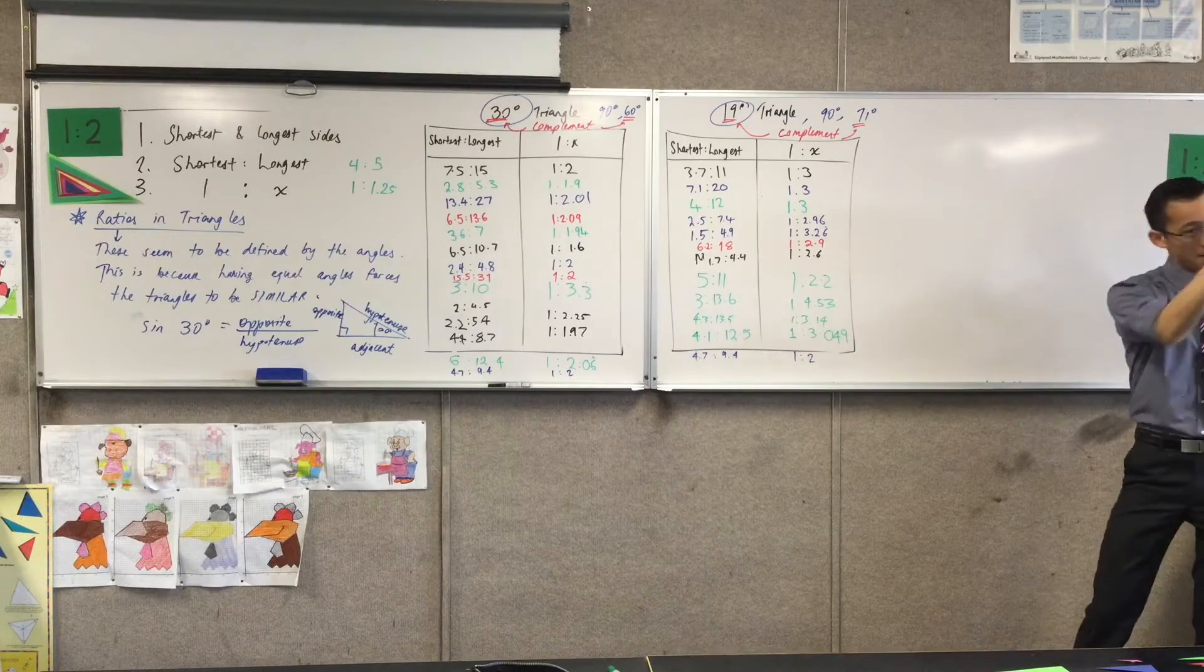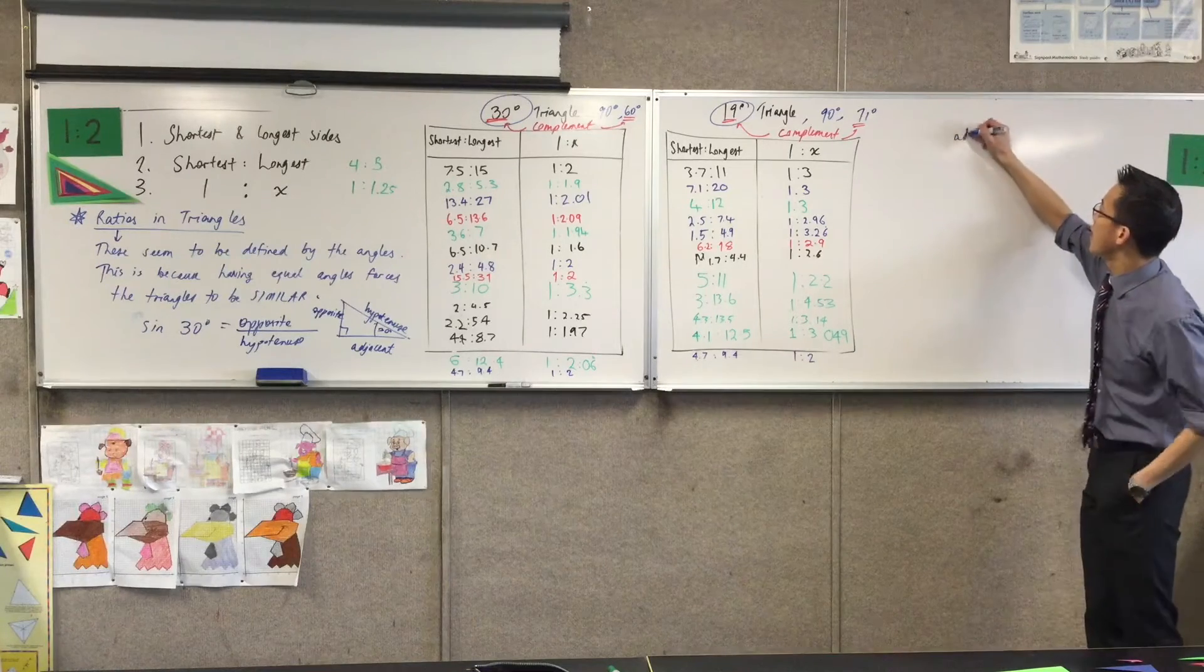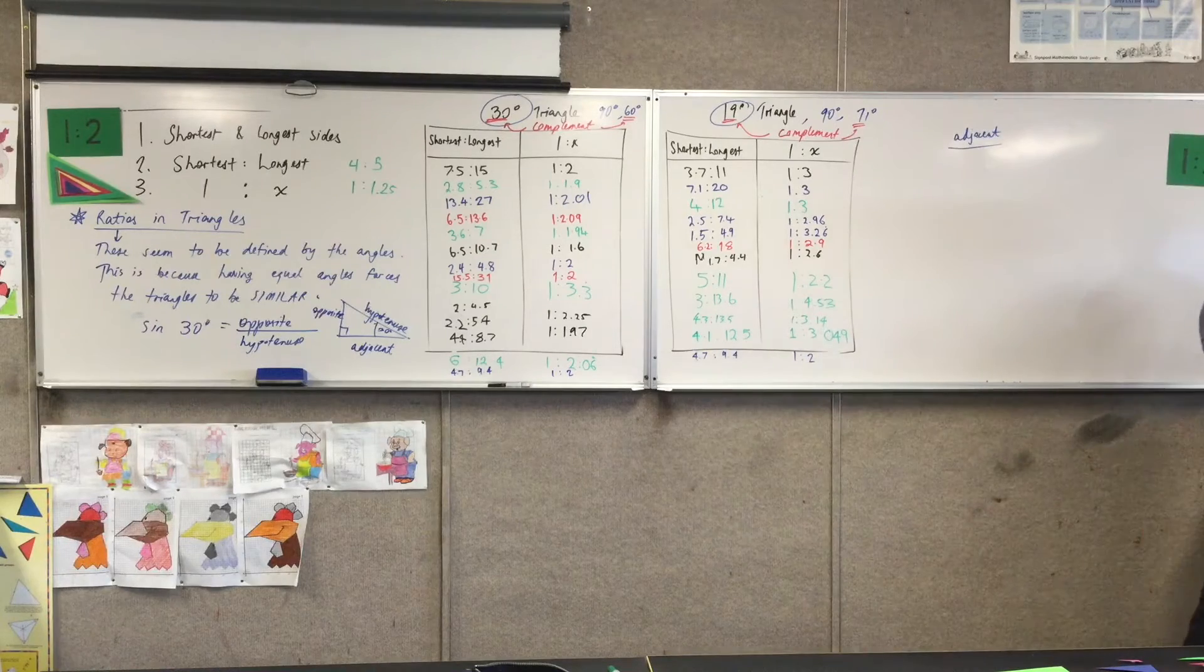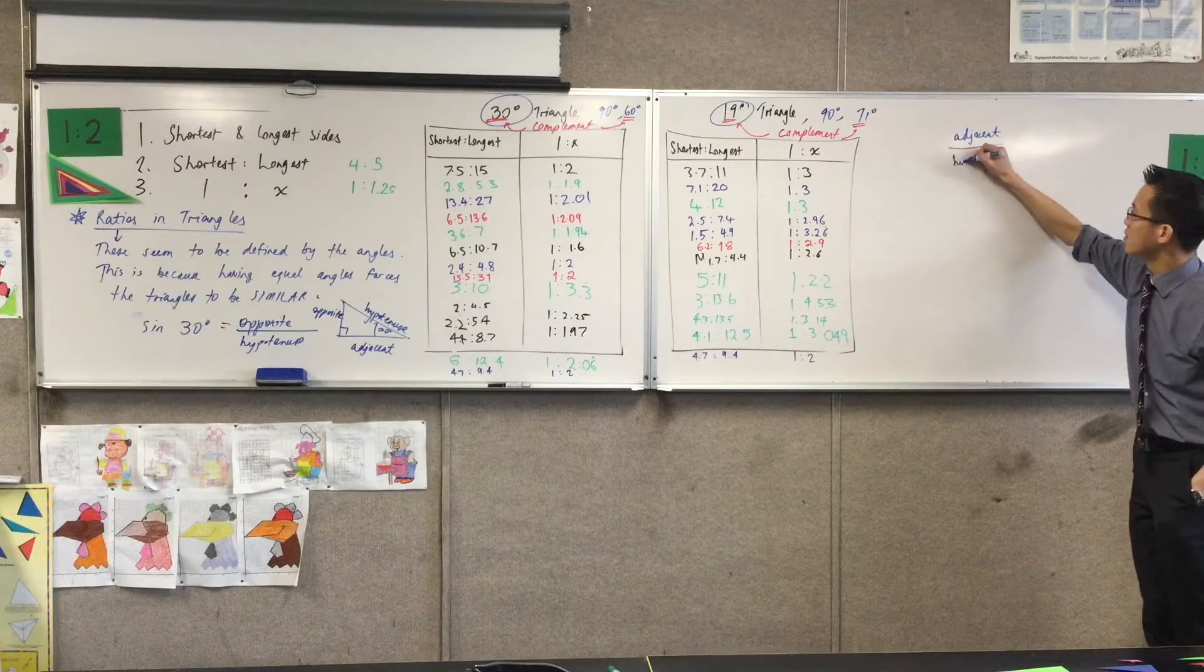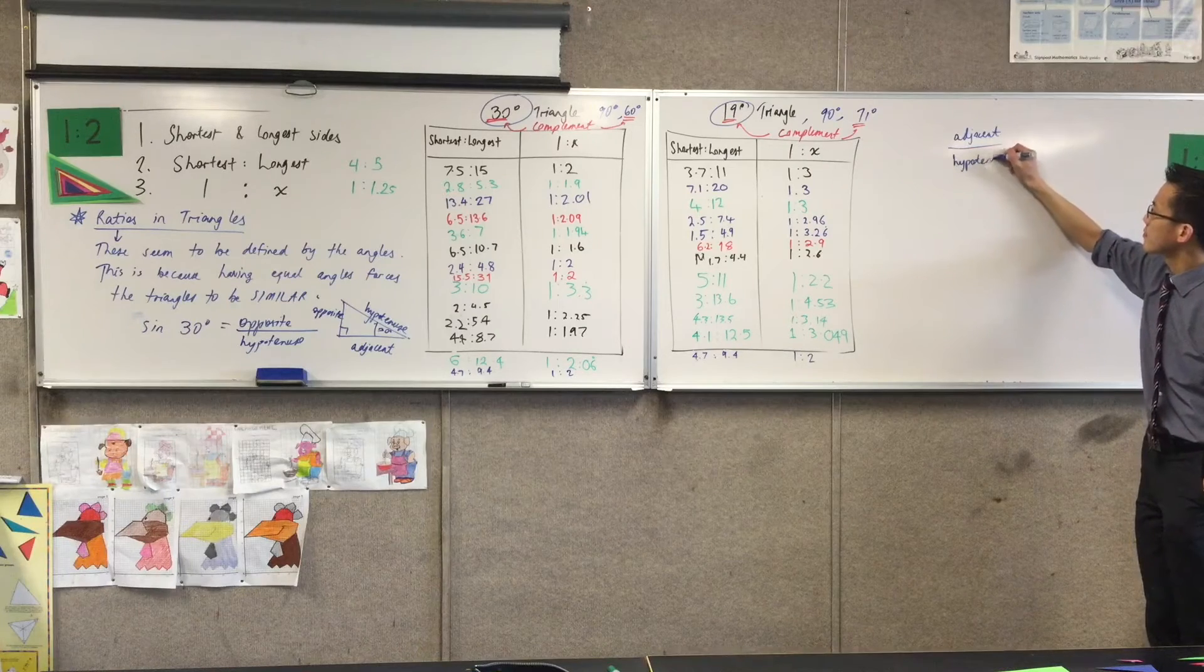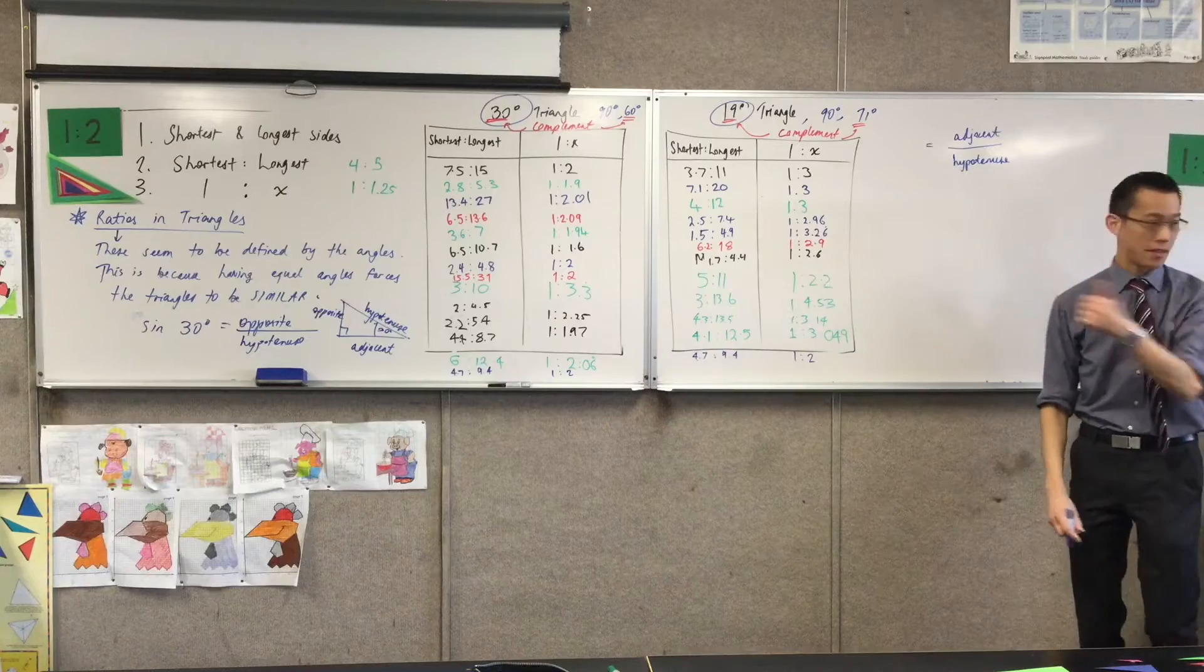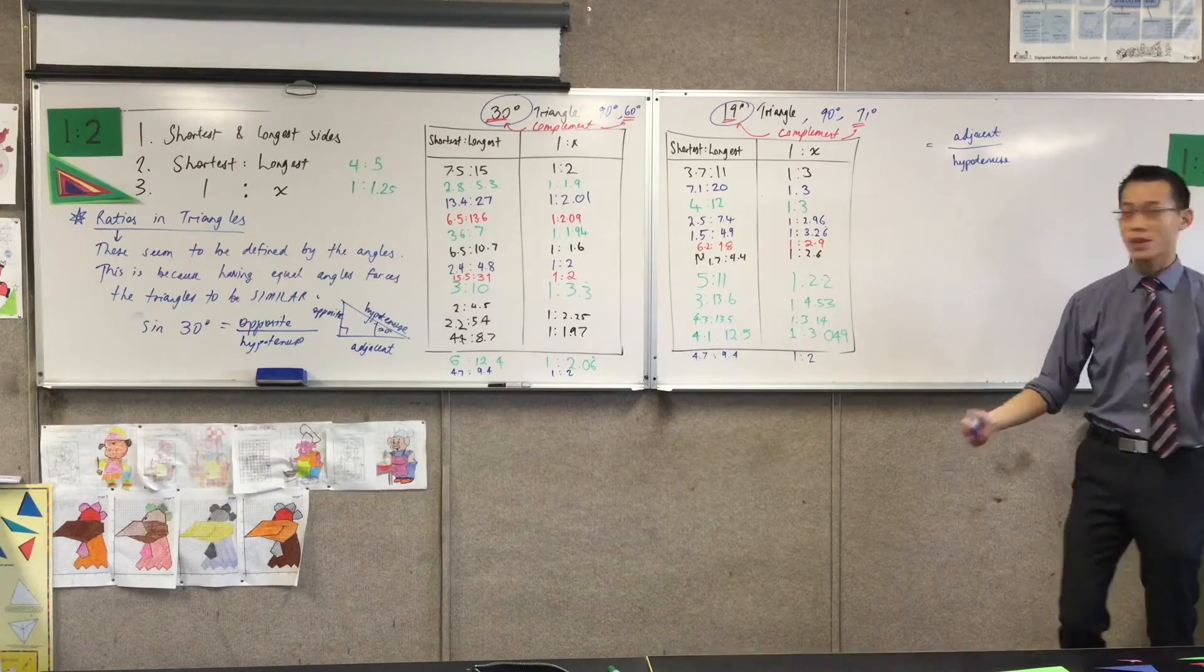We say, if instead of the opposite side and the hypotenuse, I want to compare the adjacent side, the one next to me, right? So this is like the middle length side and the hypotenuse. We call this ratio, rather than sine, we call it cosine.